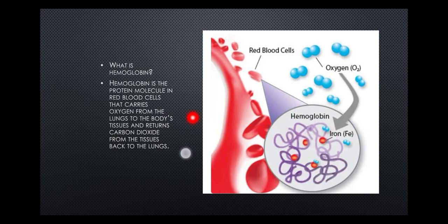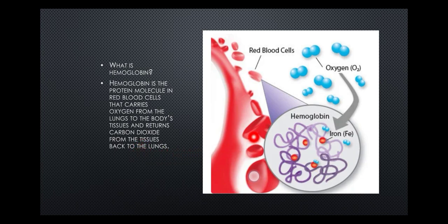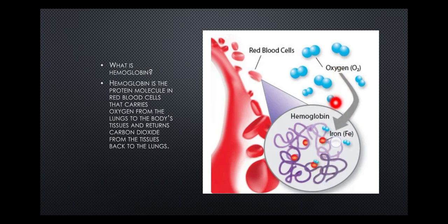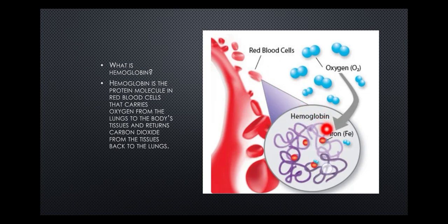Hemoglobin is the protein molecule in red blood cells that carries oxygen from the lungs to the body's tissues and returns carbon dioxide from the tissues back to the lungs. With the help of hemoglobin, oxygen is taken in and transported — it is the main and only oxygen carrier for the body.